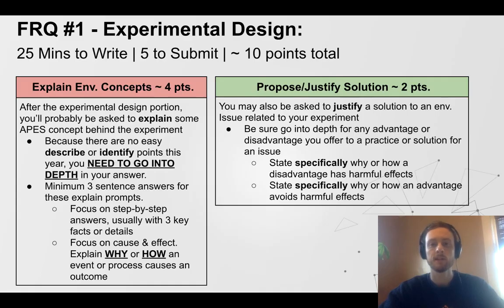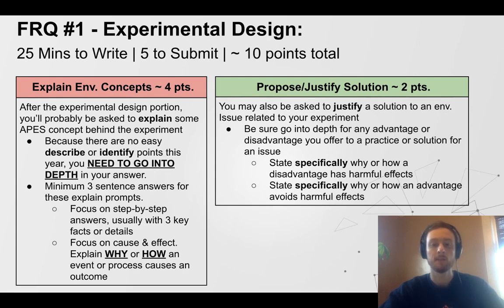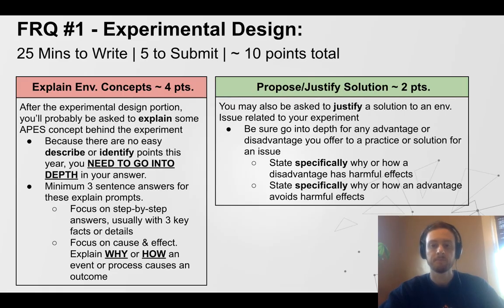For propose or justify a solution — we'll go into more depth shortly since the second FRQ will definitely feature this. If you're going to propose a solution, make sure it's specific. You may be asked to justify it, identify a disadvantage, or state an advantage. Be sure you're talking specifically about the harmful effects that come with the disadvantage — don't just say it's harder to do or costs more money. For an advantage, talk specifically about the harmful environmental impacts that it avoids, reduces, or mitigates.